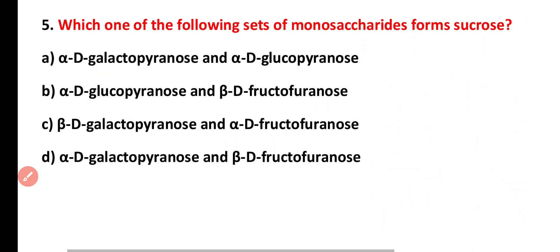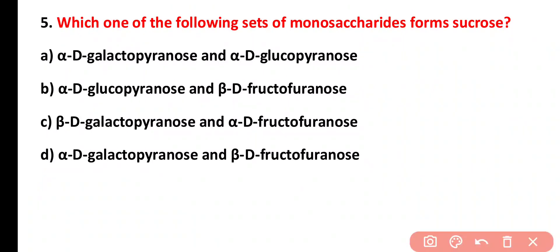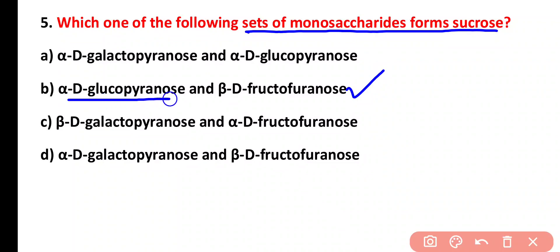Question five: which of the following sets of monosaccharides form sucrose? Option A: alpha-D-galactopyranose and alpha-D-glucopyranose. Option B: alpha-D-glucopyranose and beta-D-fructofuranose. The correct answer is option B. Sucrose consists of glucose and fructose; glucose is alpha-D and has a six-sided ring, so it is called pyranose.